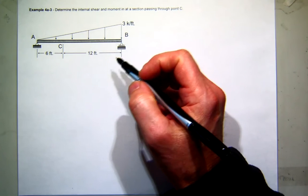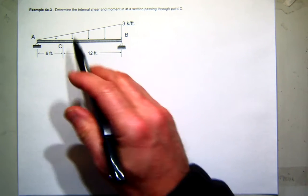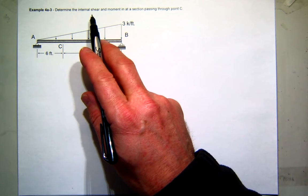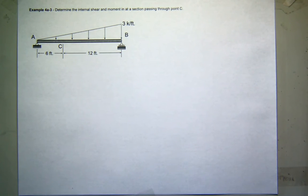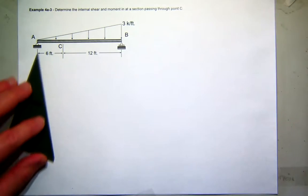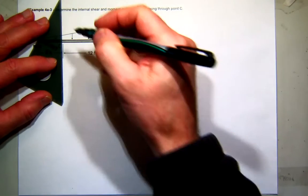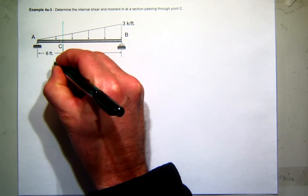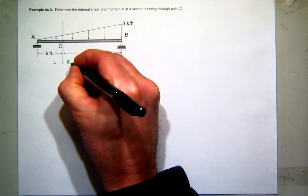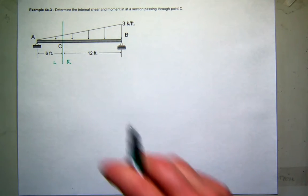Alright, so here's a problem. We want to determine the internal shear force and bending moment at point C. My strategy, like we did last time, would be to draw a line there at C. And let's investigate left side or right side, whichever one's going to be to our advantage.